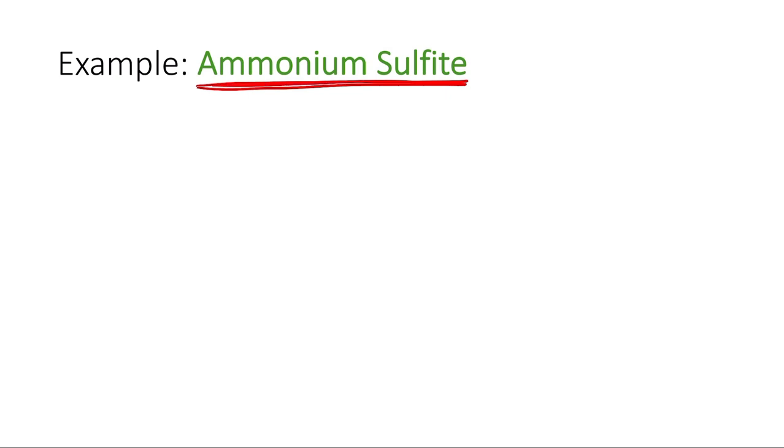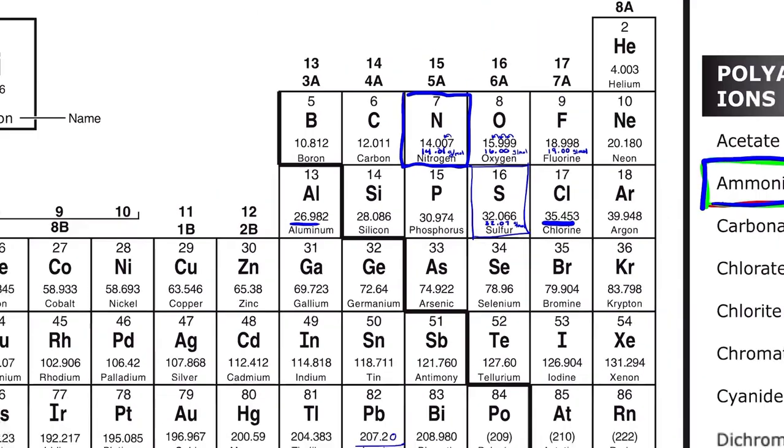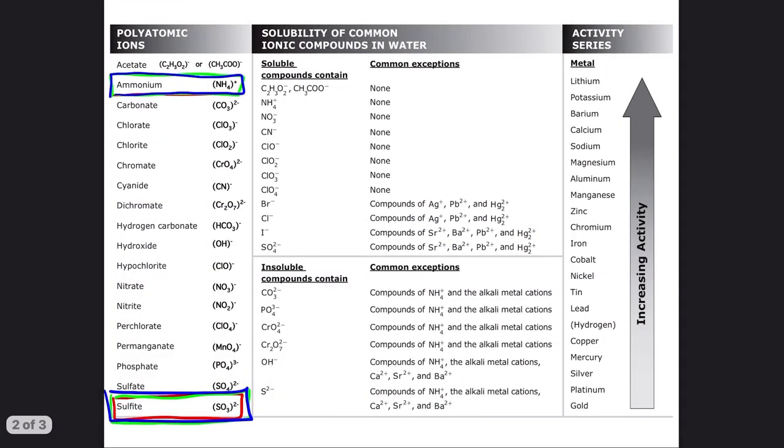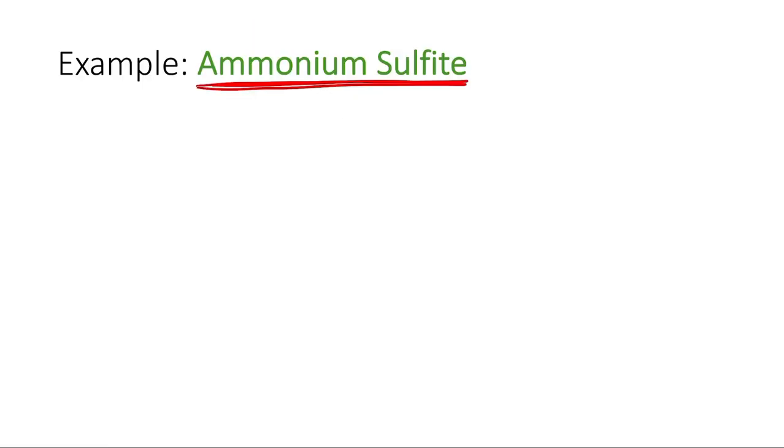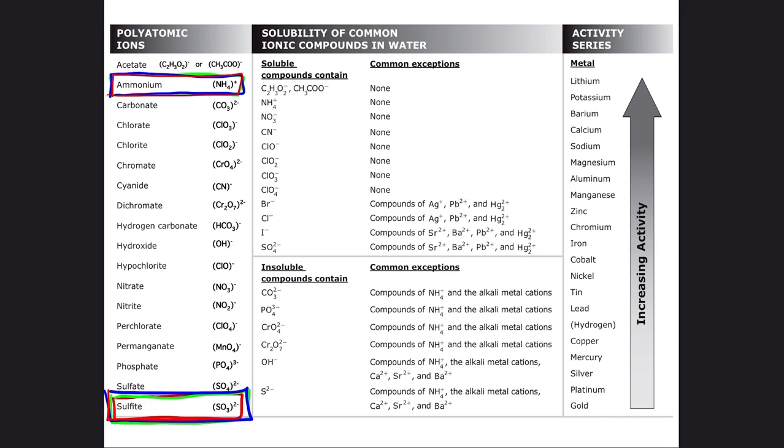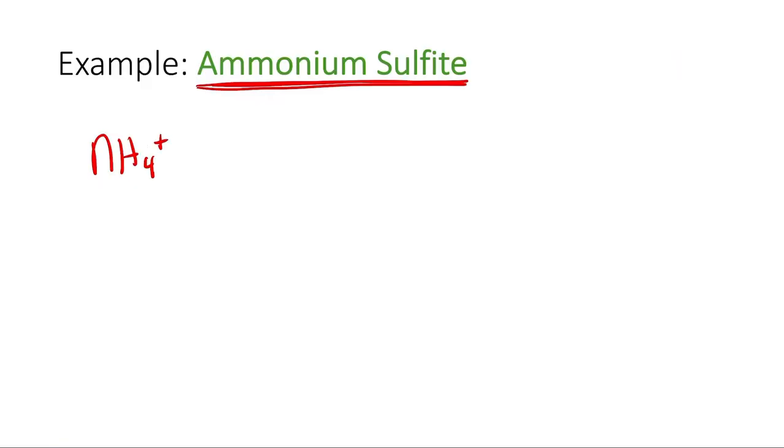So if you remember, ammonium is a polyatomic ion. If we take a look at our polyatomic ion list, ammonium is right up here. It's the only positively charged polyatomic ion on the list that we use in this class, NH₄⁺. And then sulfite is also a polyatomic ion, down here at the bottom, SO₃²⁻.